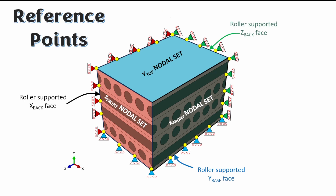The next thing to think about is that you need to isolate reference points that will be attached onto this domain at specific locations. We have three reference points: reference point 1 on the X direction, reference point 2 in the Y direction, and reference point 3 in the Z direction. These will be used as anchor points to apply loading on the system.